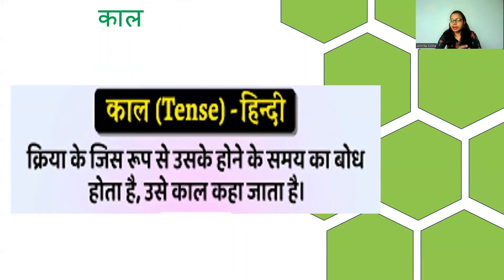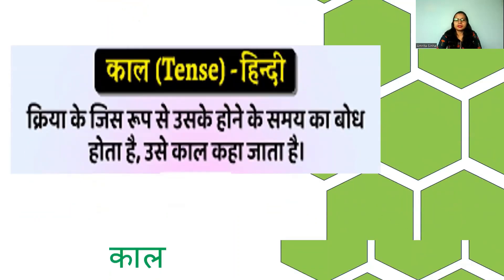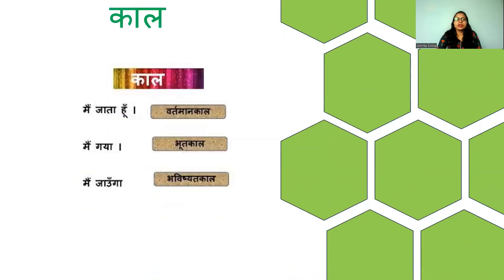usse kaal kaha jata hai. That's why I have taught Kriya first — Kriya means action words, you already know. So Kriya ke jis roop se — the word which is actually the Kriya word — which helps you to understand the time, is the Kaal. Samay ka bodh hota hai, usse kaal kaha jata hai.